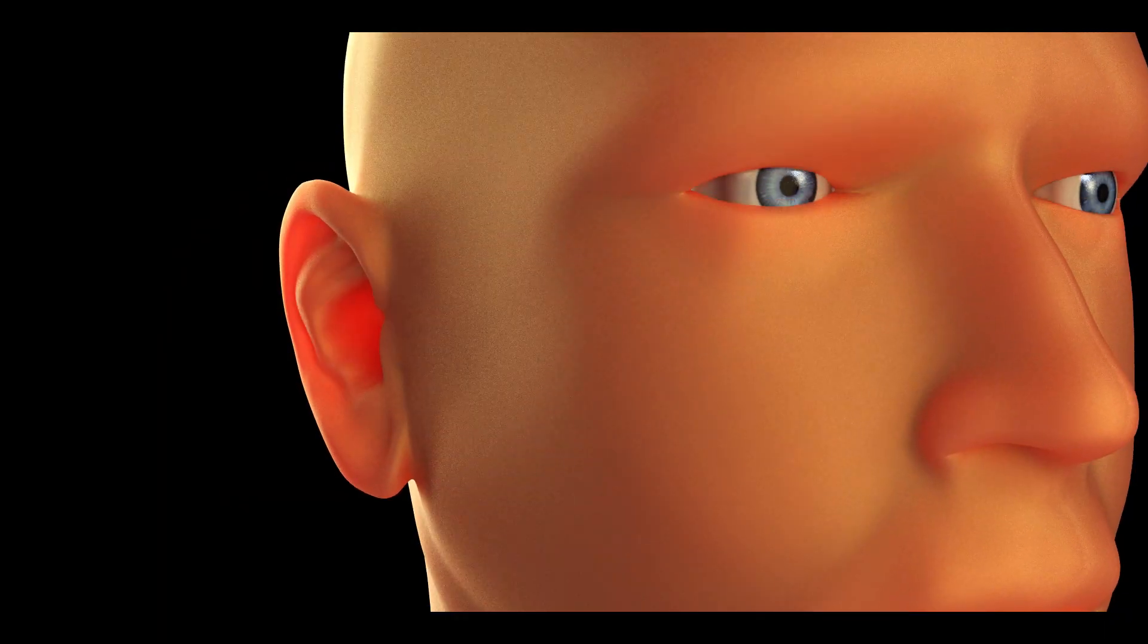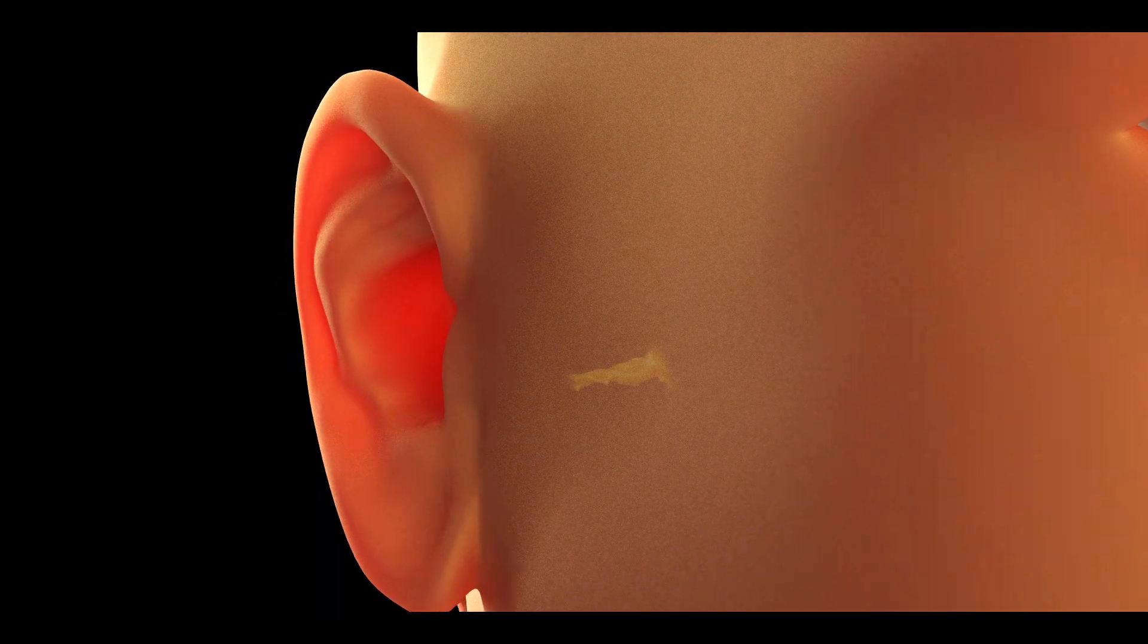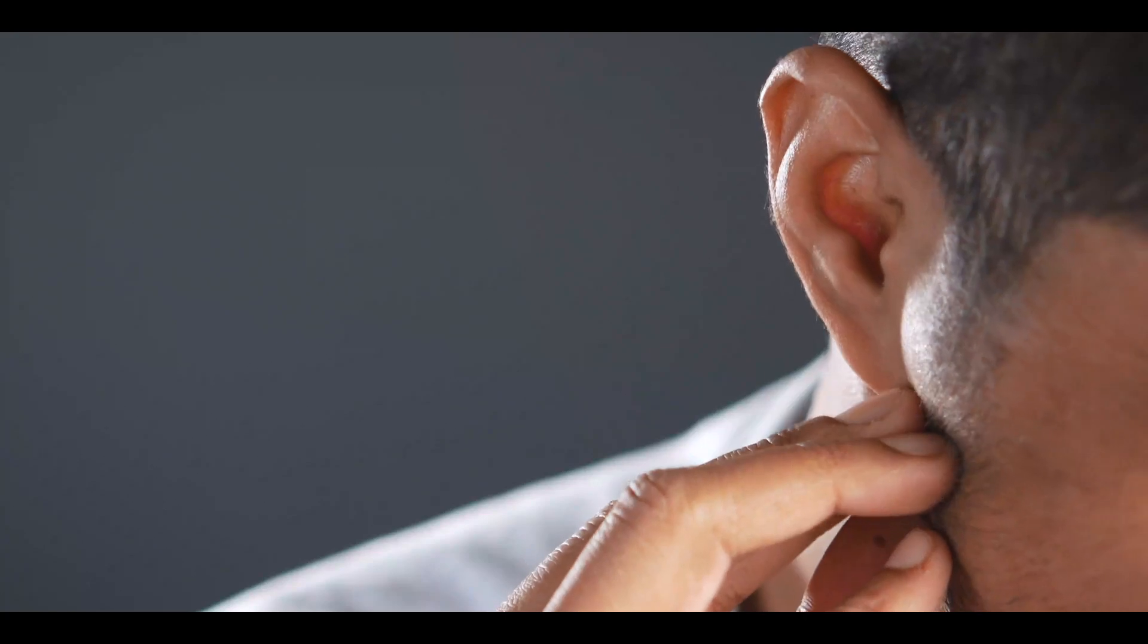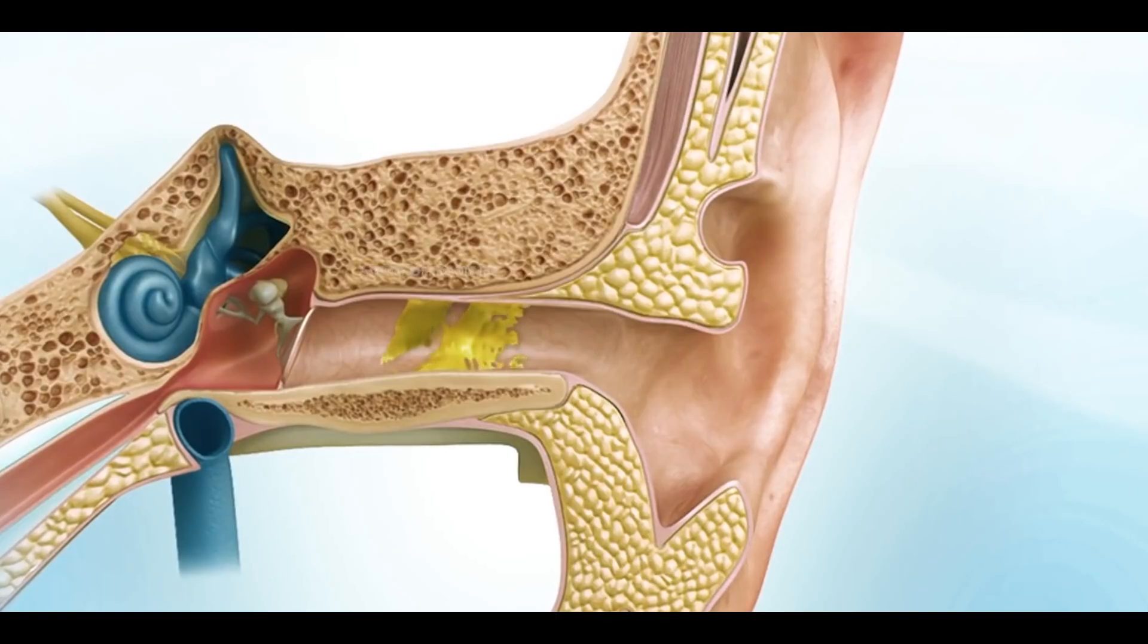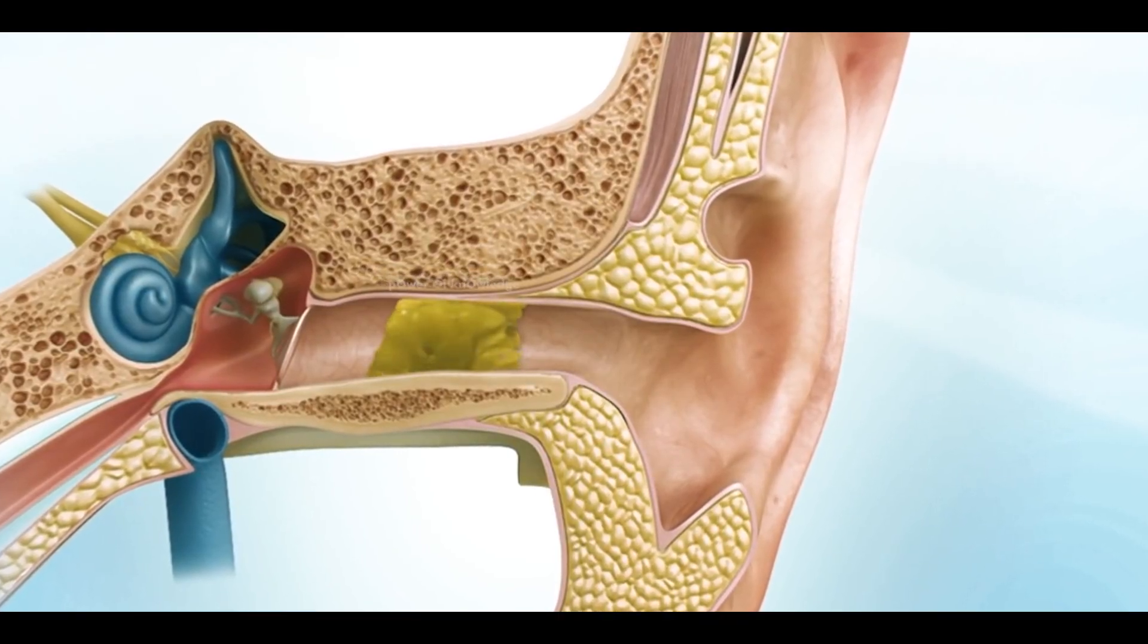Besides, sometimes due to some reasons, if overproduction of cerumen occurs in our ears or old cerumen cannot be eliminated, it causes accumulation of cerumen that reaches the eardrums and disturbs the ear's function.